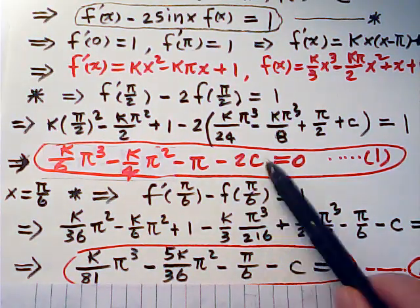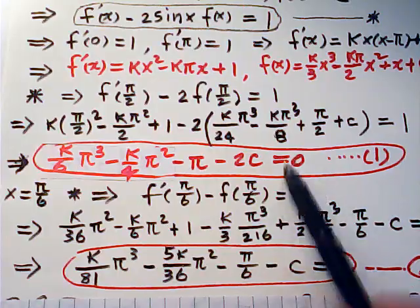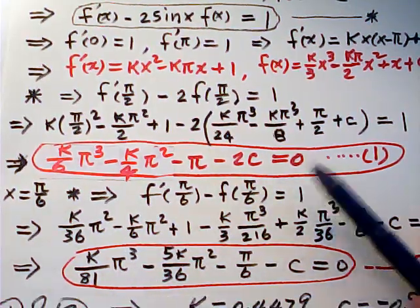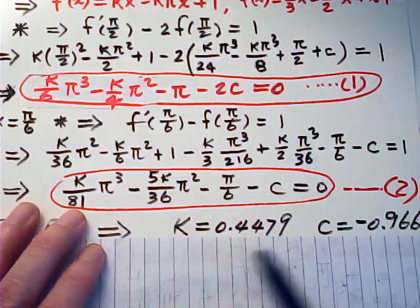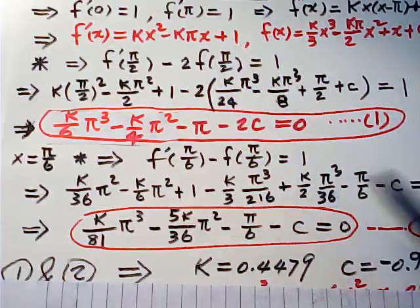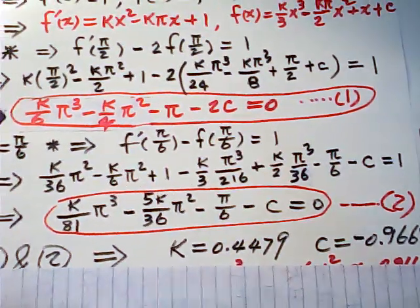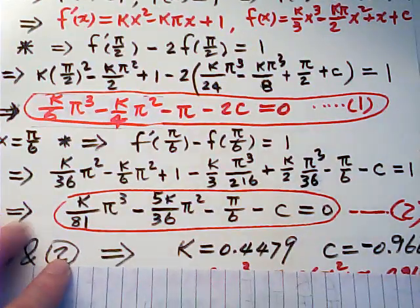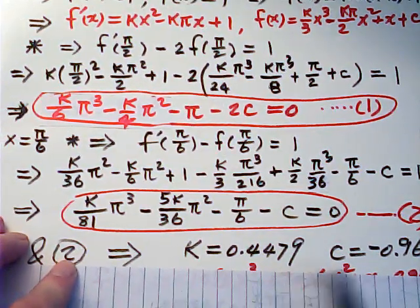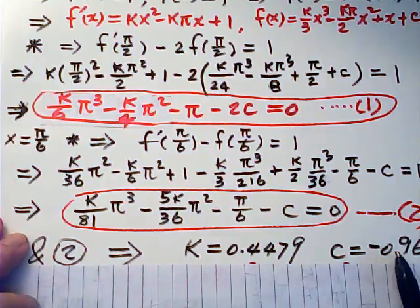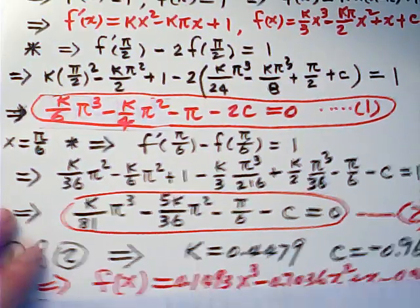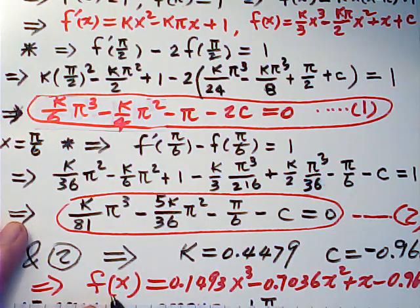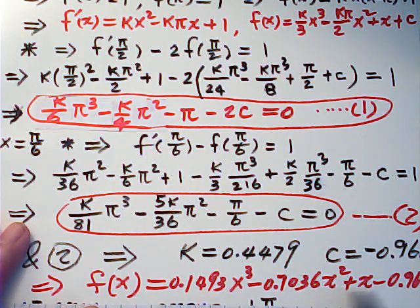Now we have two equations. We can solve for k and c. So we find k and c. Of course there's quite some arithmetic calculations. I did three times. And I believe these values should be correct. Once you have k and c, then we have f(x). Just plug k and c over there, we have f(x). This is our f(x) function.